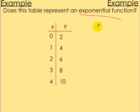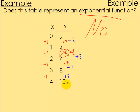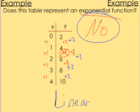Does this table represent an exponential function? Adding 1 to x each time, we check if y values multiply by the same ratio: 2 times 2 is 4, but 4 times what gives 6? That's three-halves, not 2. The ratio isn't constant, so this is not exponential. In fact, the y values are always adding 2, which makes this a linear function — not exponential. Linear functions add or subtract the same amount, while exponential functions multiply by a common ratio.